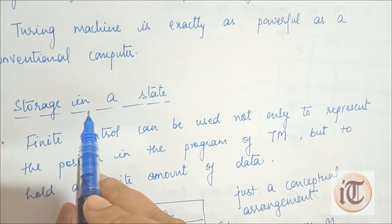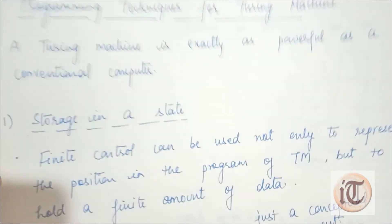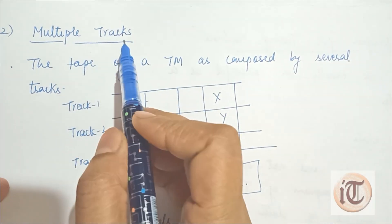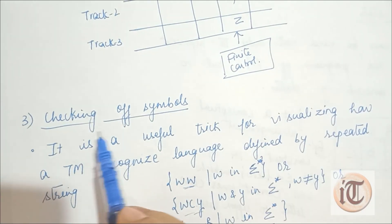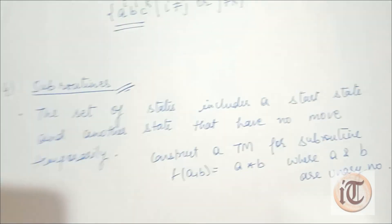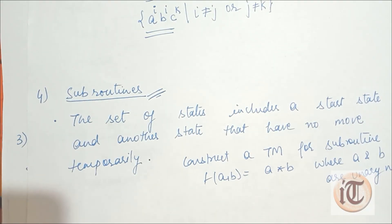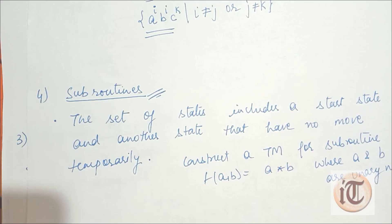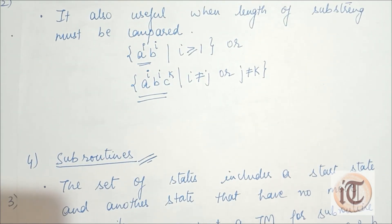So these are the four programming techniques used for Turing machines: storage in a state, multiple tracks, checking of symbols, and subroutines. These are the four programming techniques used for solving Turing machine problems. If you have any questions, you can ask in the comment section or send your query to our business email id. Keep watching our videos. Thank you so much.